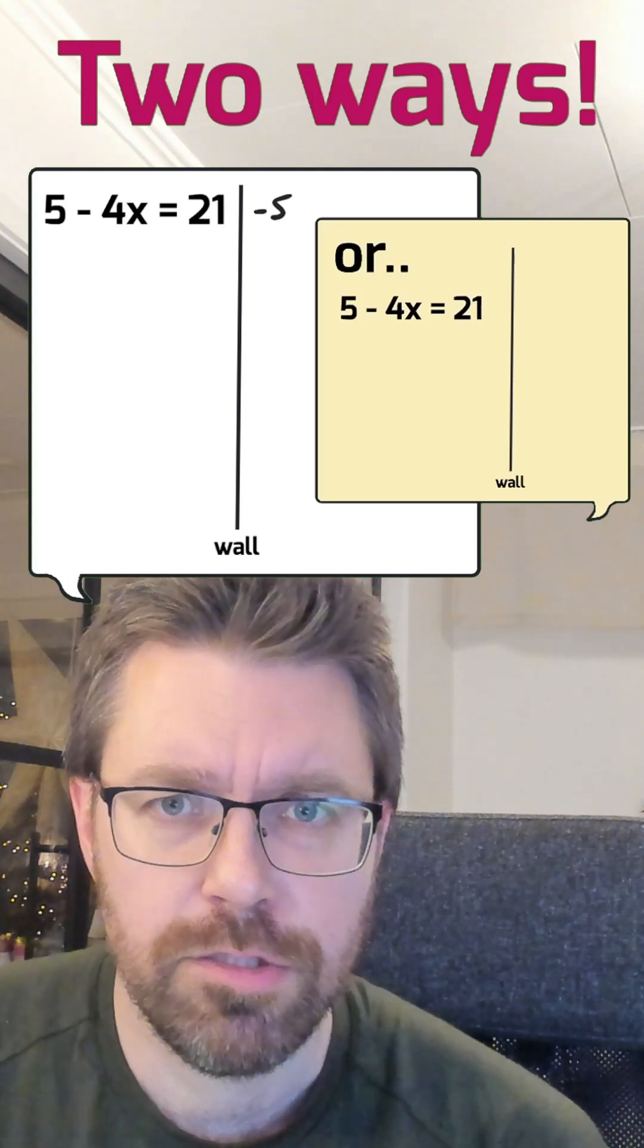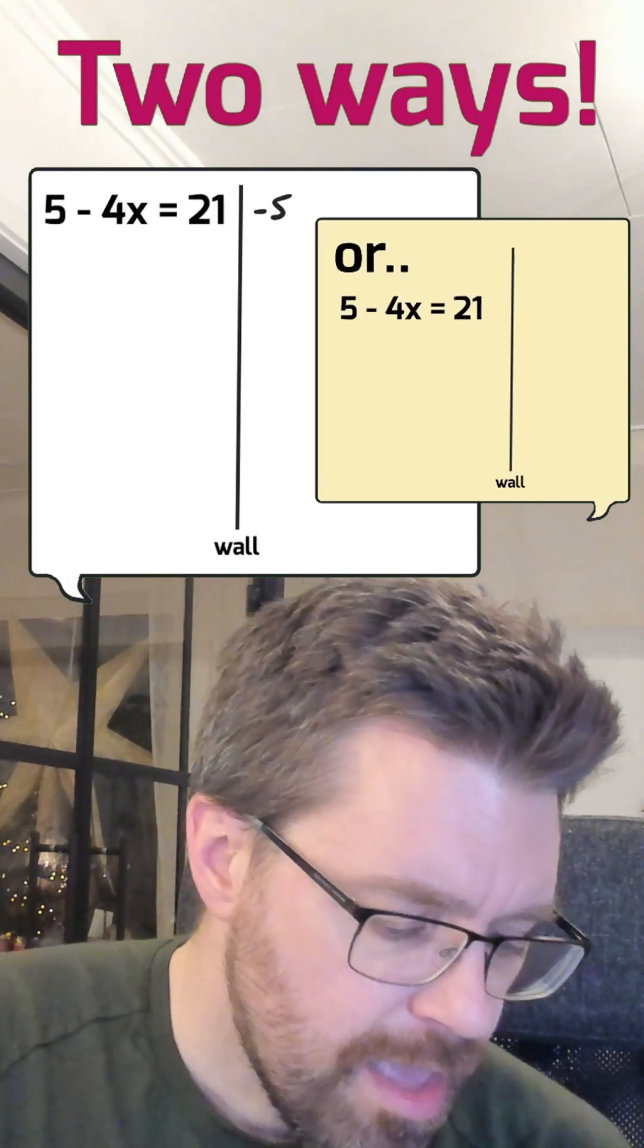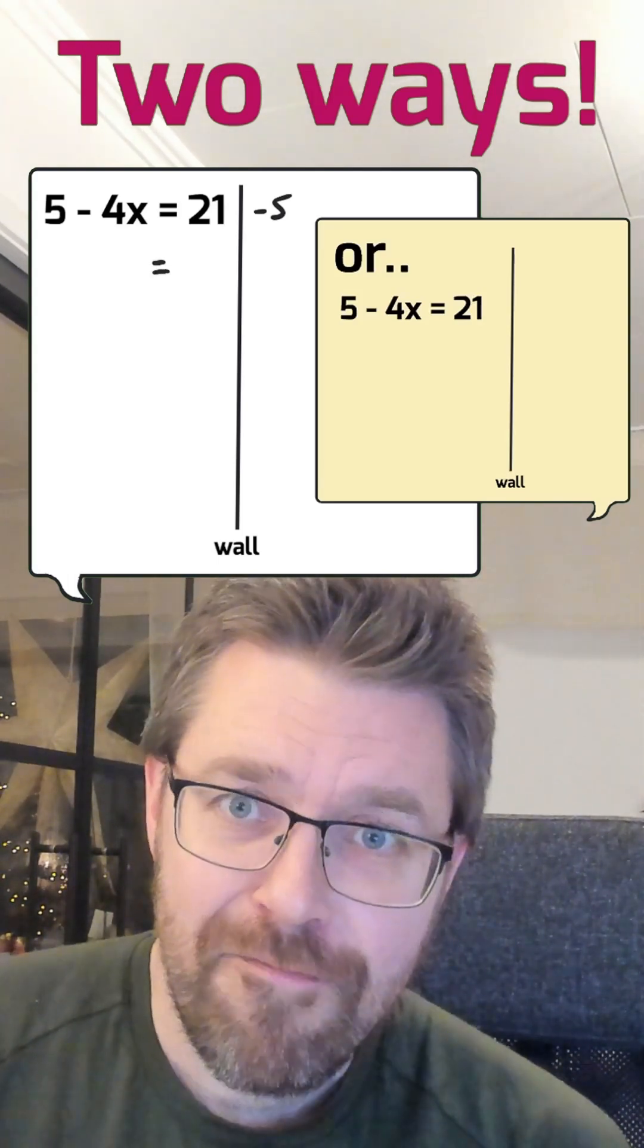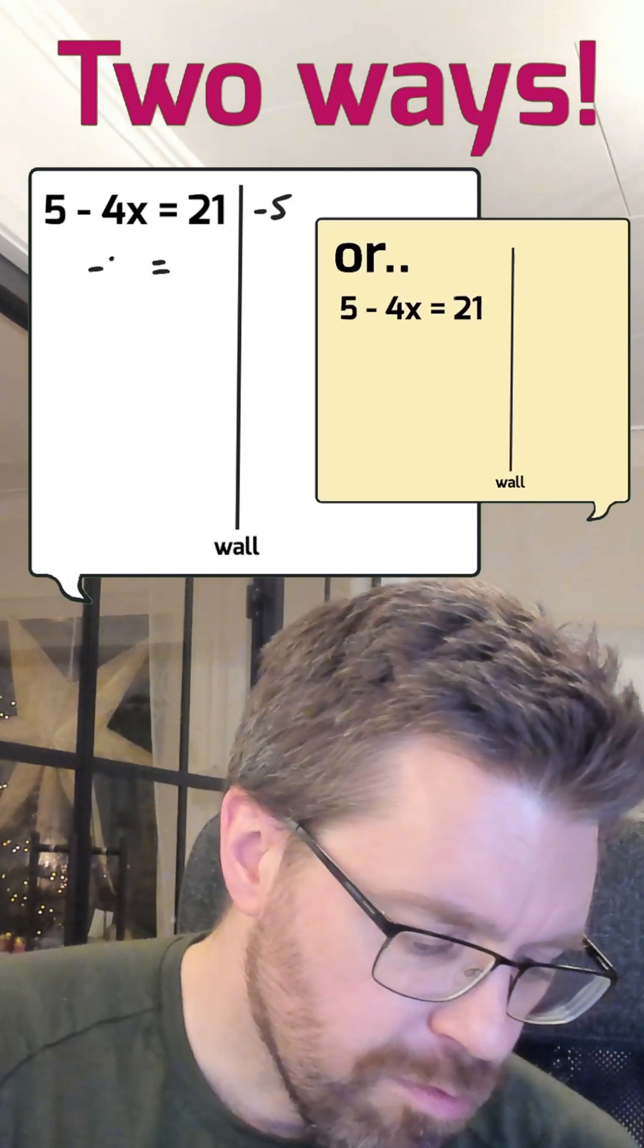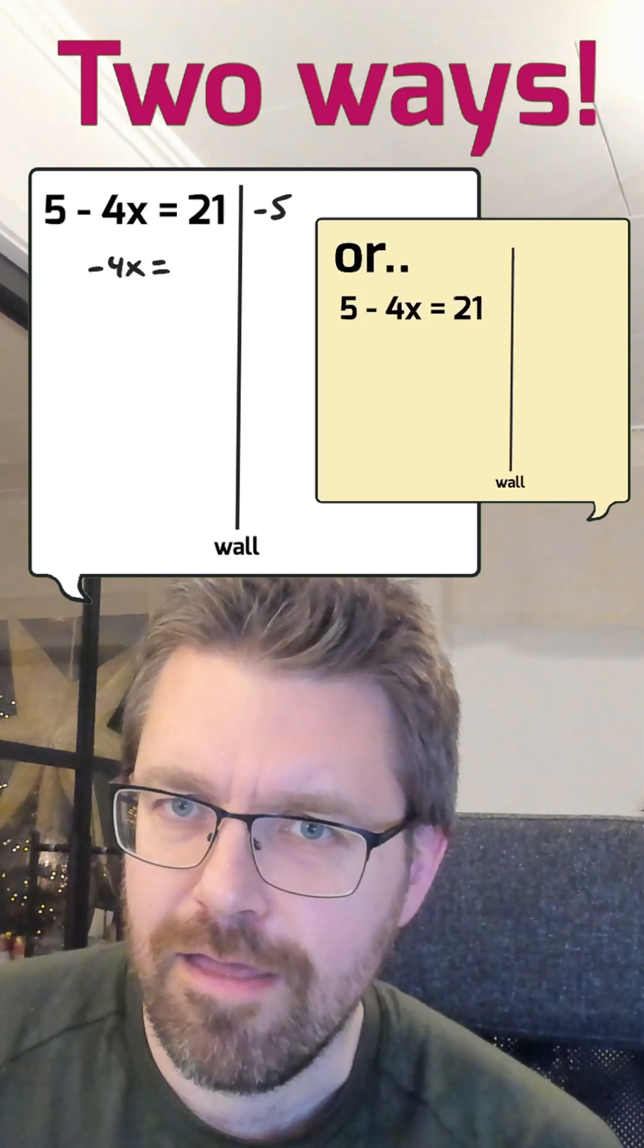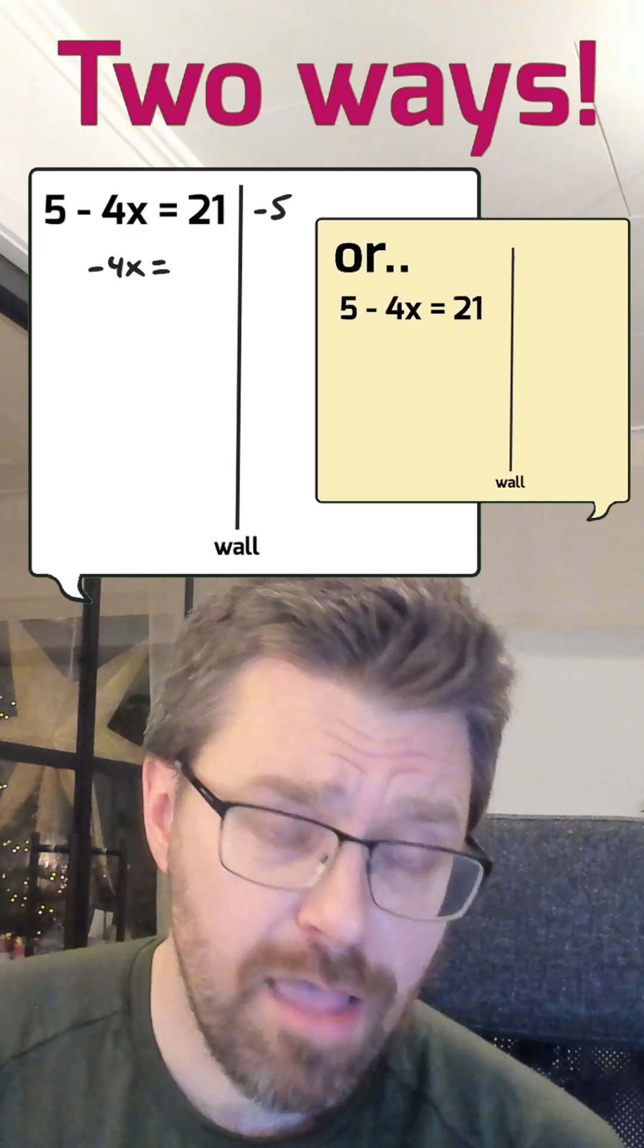I write it on the wall method on the right side here. And on the left side of the equation, I only got minus 4x on the left. On the right side, I got 16.